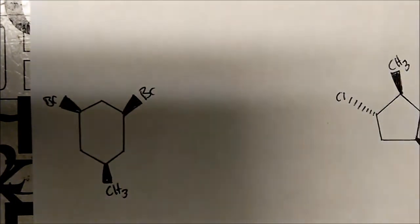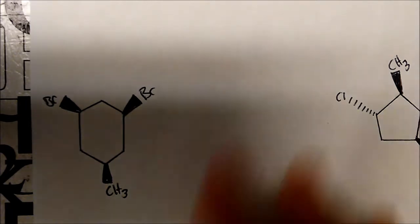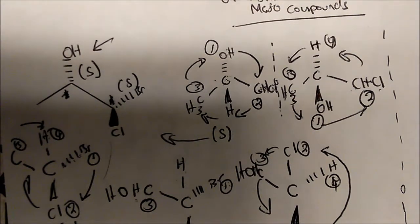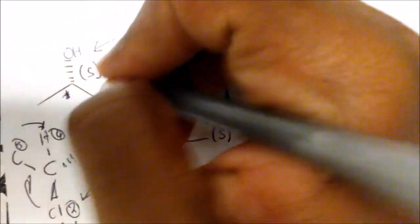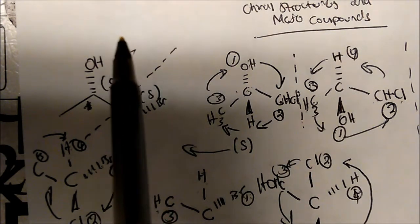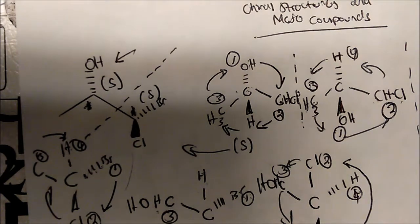Now let's move on to something different. To determine if this molecule is overall chiral, you want to find any plane of symmetry and draw a line through it. When you split this molecule in half, you do not get the same thing — you get chlorine and bromine on one side and an alcohol and methyl group on the other. So this molecule is overall chiral because it has no symmetry.